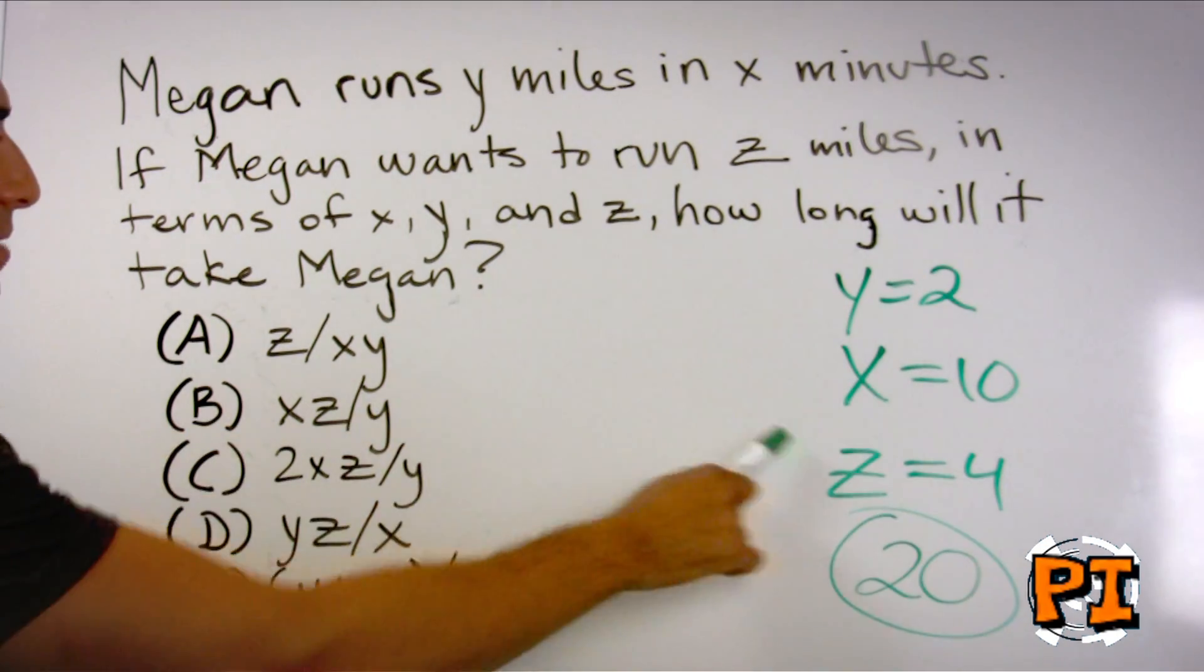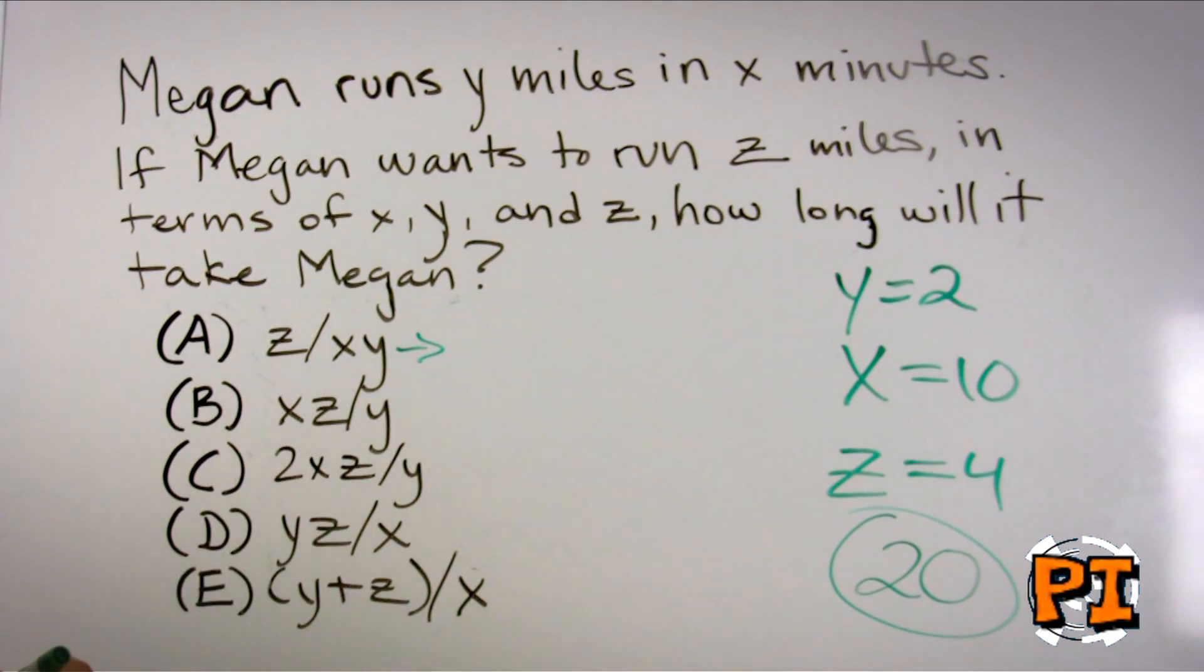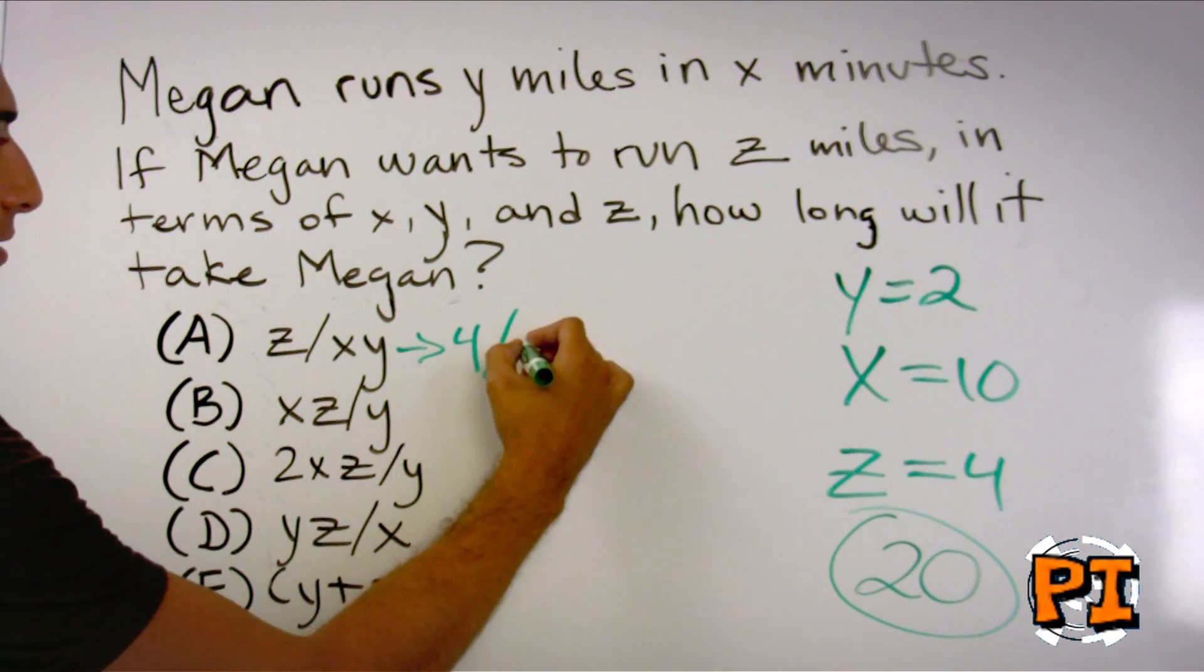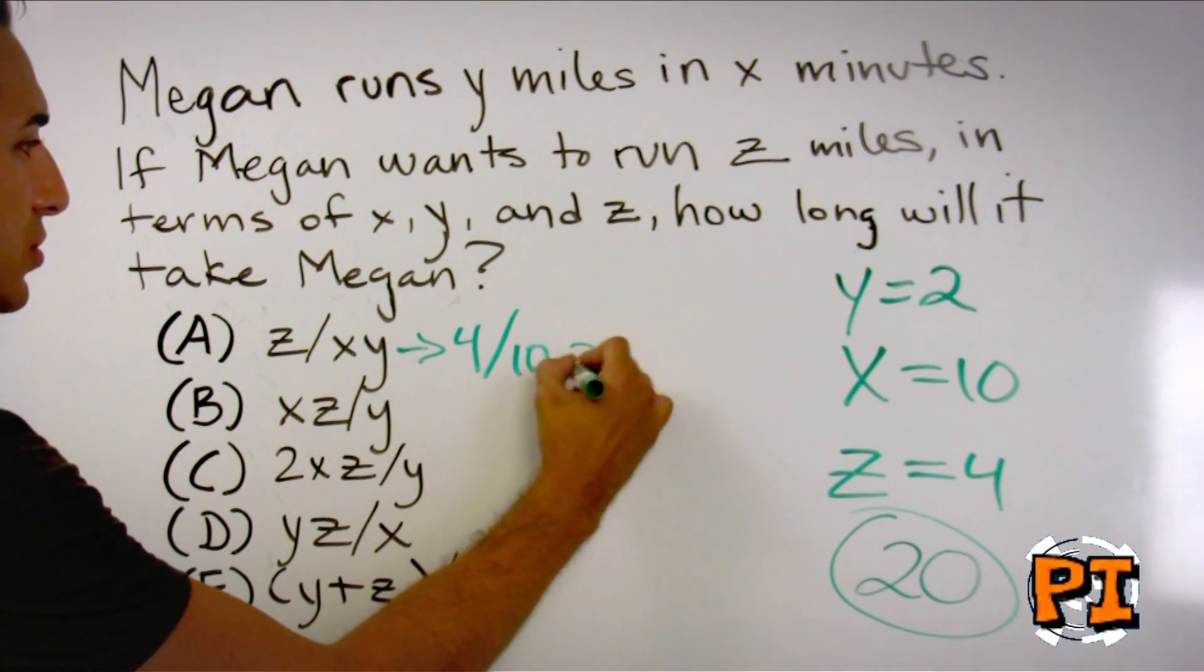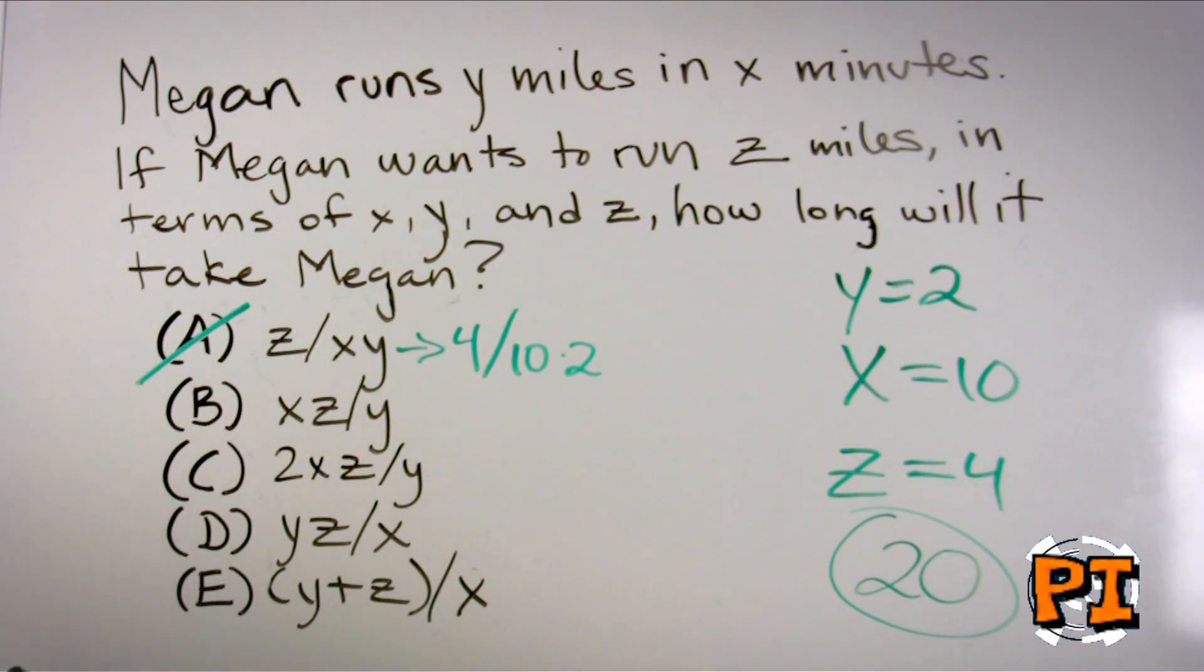Now all we do is we use these numbers in the answer choices and see if we can't come up with 20. For answer choice A, z is equal to 4. 4 divided by 10 times 2 does not equal 20. Answer choice A is wrong.